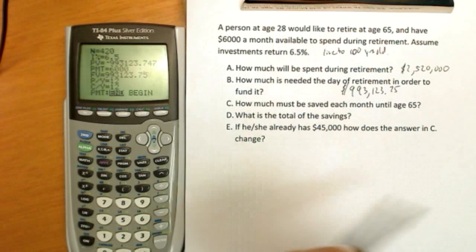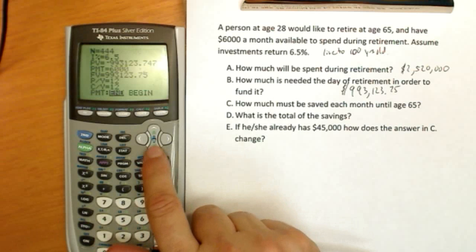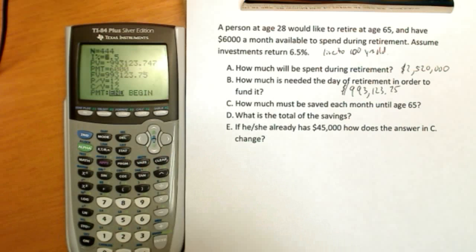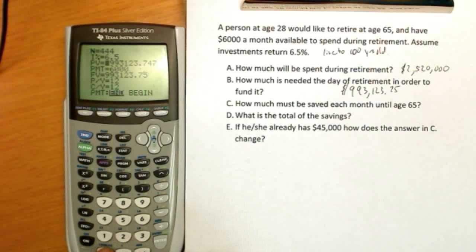Working years, we have from 28 to 65. Well, I can handle this in here. 12 times 65 minus 28. I don't want to do the arithmetic in my head. It tells me I have 444 months to save the money.